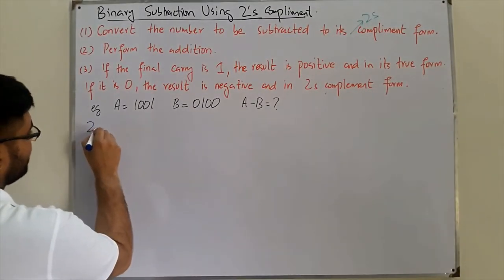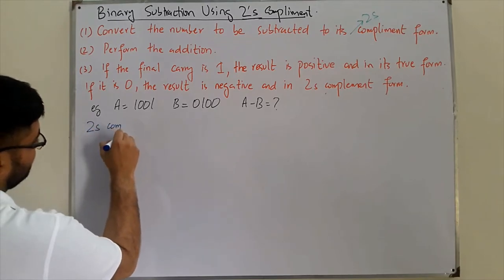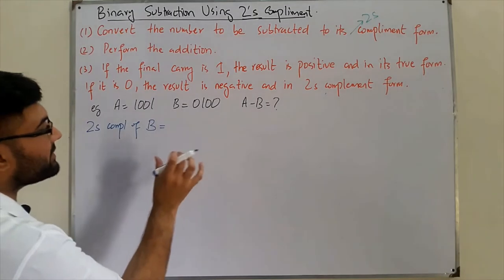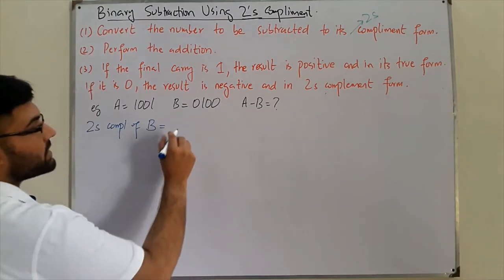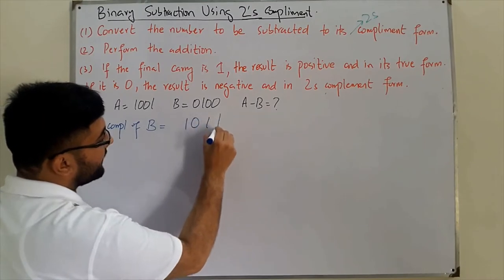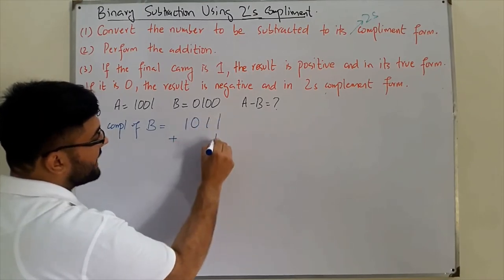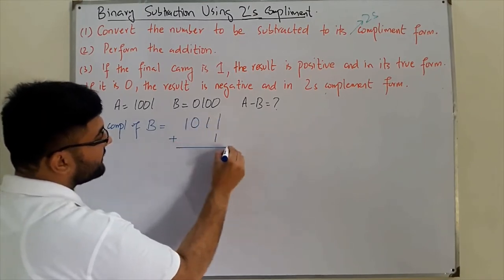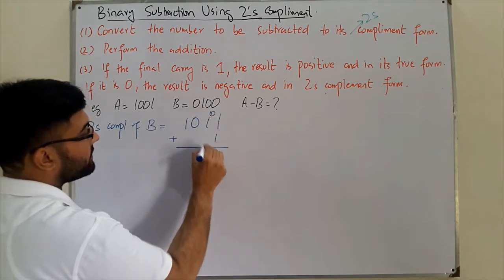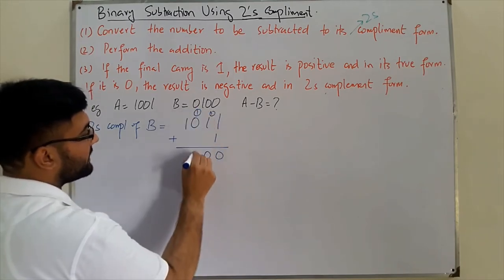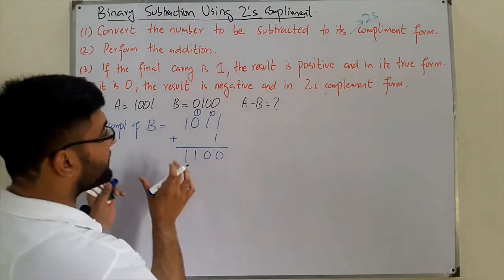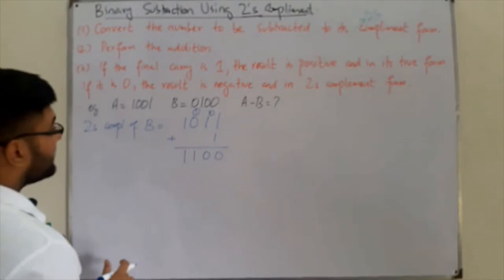To find the two's complement of B: the one's complement is found by directly inverting the bits, giving 1011. For the two's complement, we add one to it. Adding: one and one is zero carry one, one carry one, then one, then one — so the two's complement of B is 1100.